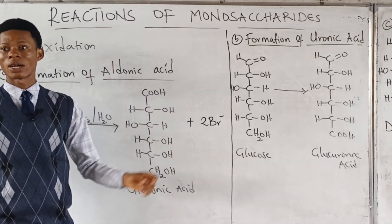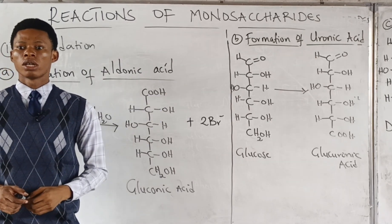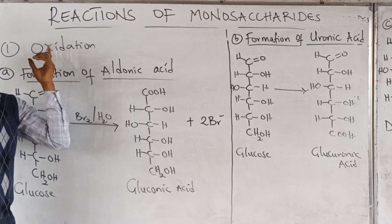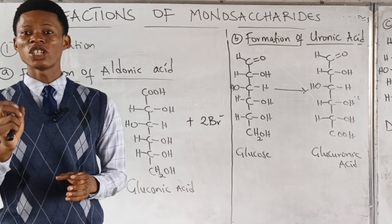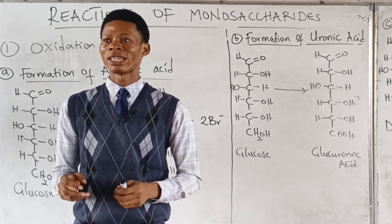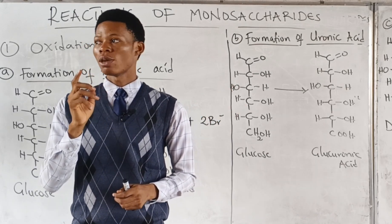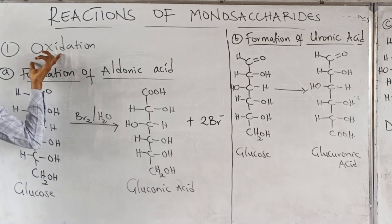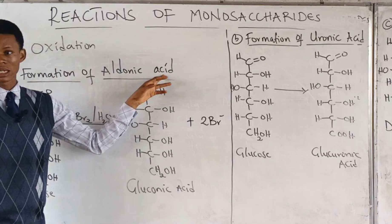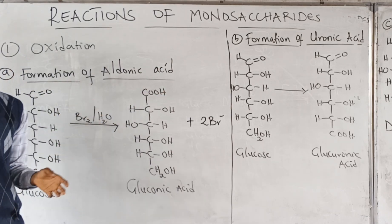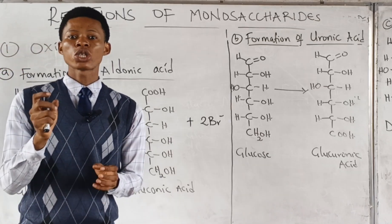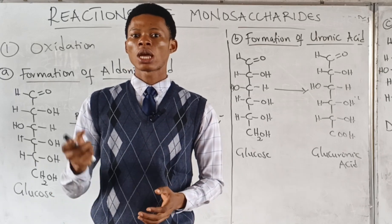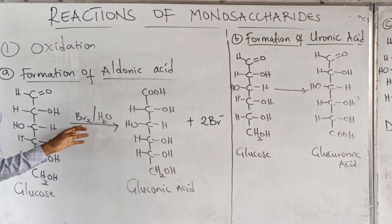We want to look at the reactions of monosaccharides. One of the reactions of monosaccharides is oxidation. Depending on the type of oxidizing agent used, monosaccharides can undergo three types of oxidation. The first type is formation of aldonic acid. In aldonic acid formation, we are using a weak oxidizing agent like Fehling's reagent, Benedict's reagent, or bromine water.